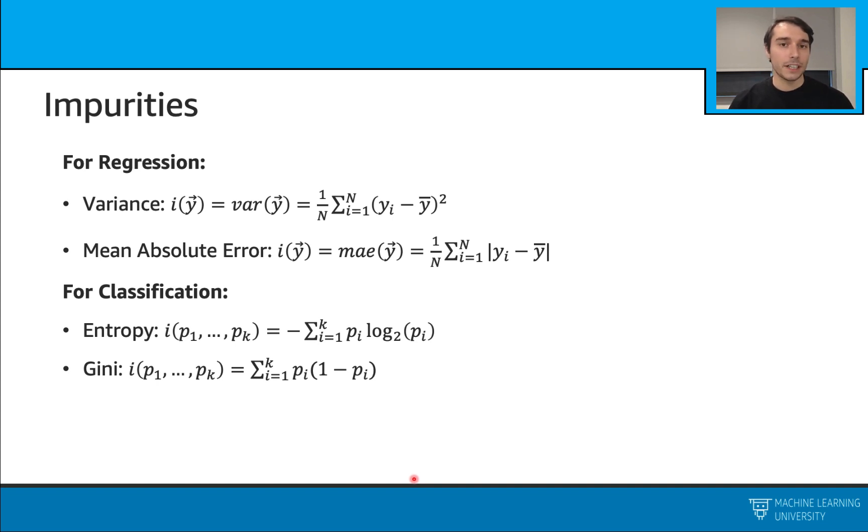We also define our impurities. For regression, we can use variance or mean absolute error. For classification, we can use entropy or gini.